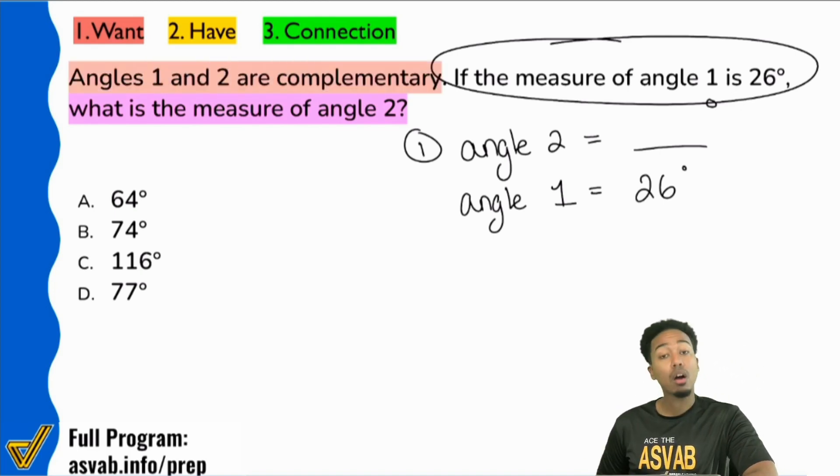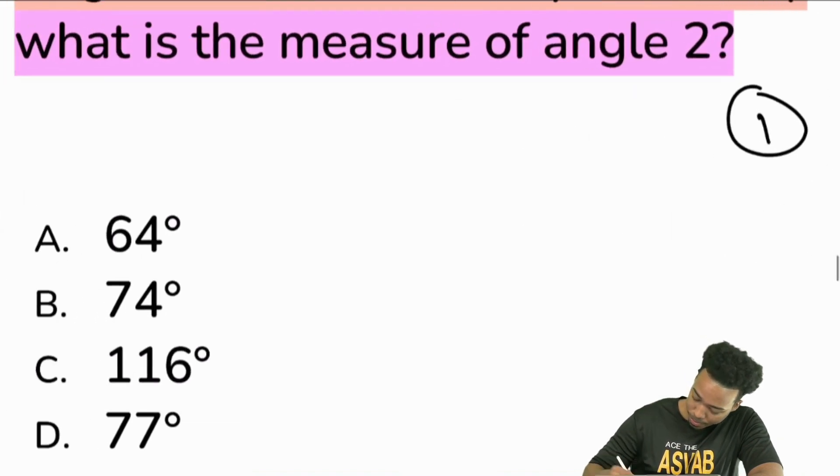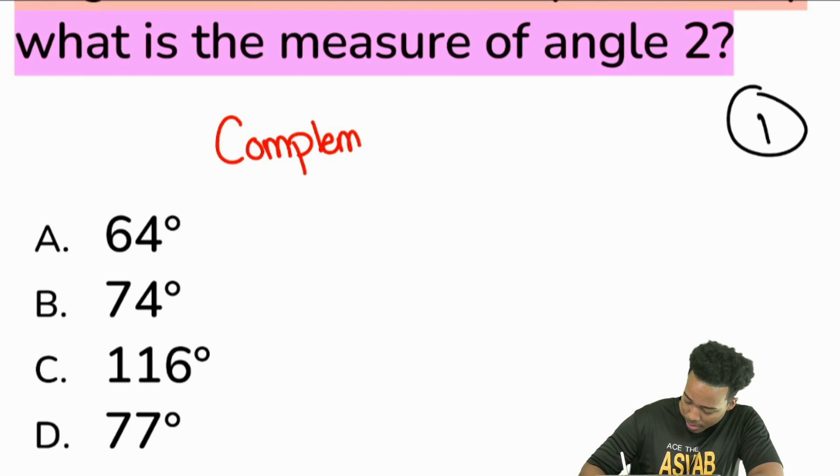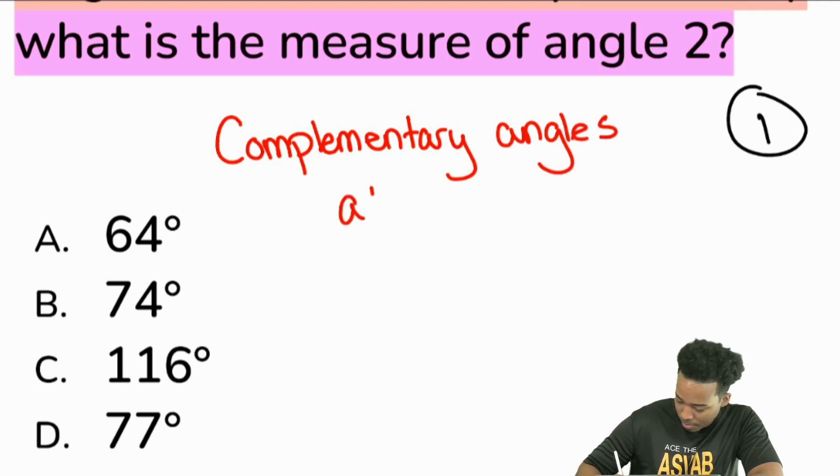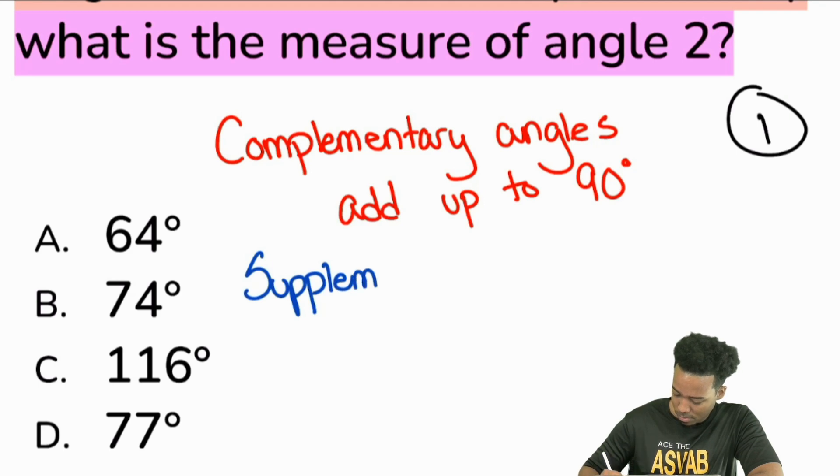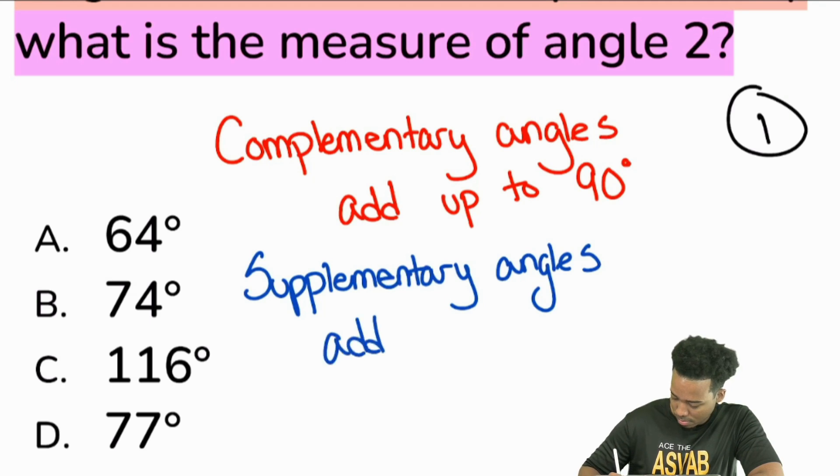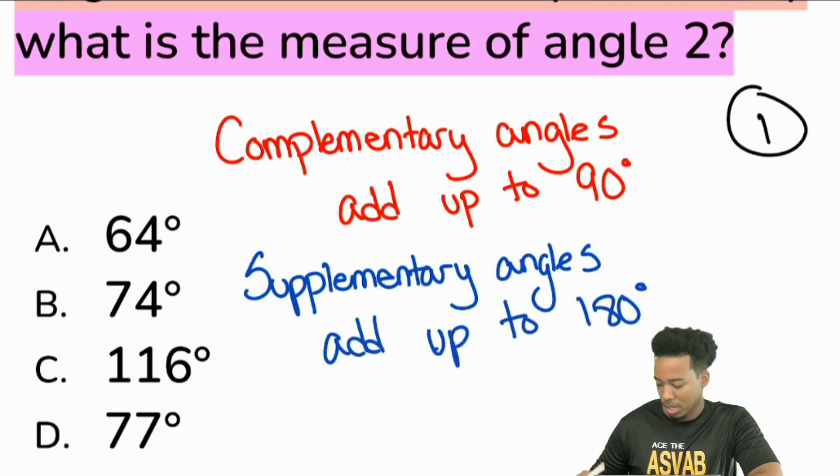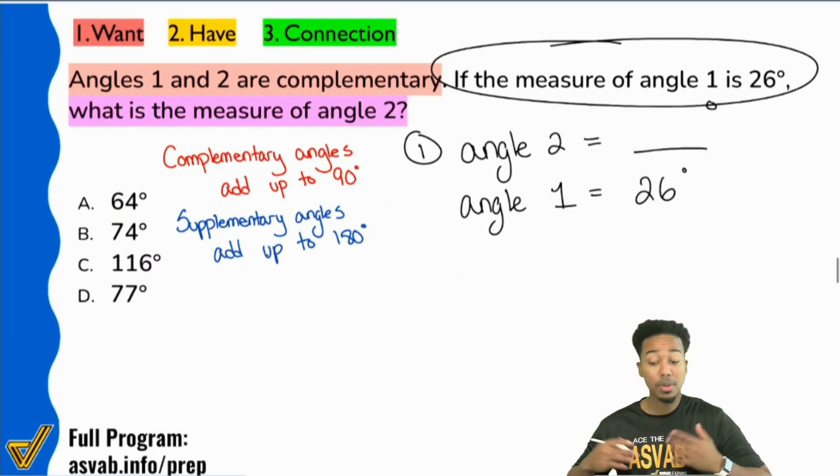angles one and two are complementary. Complementary angles. Let's define that again. Complementary angles right over here. Write this down if you need to. Complementary angles add up to 90 degrees. If you're talking about supplementary angles, those add up to what? Yep. That's going to be 180 degrees. So just in case you needed to see that there for supplementary. But there you have it.